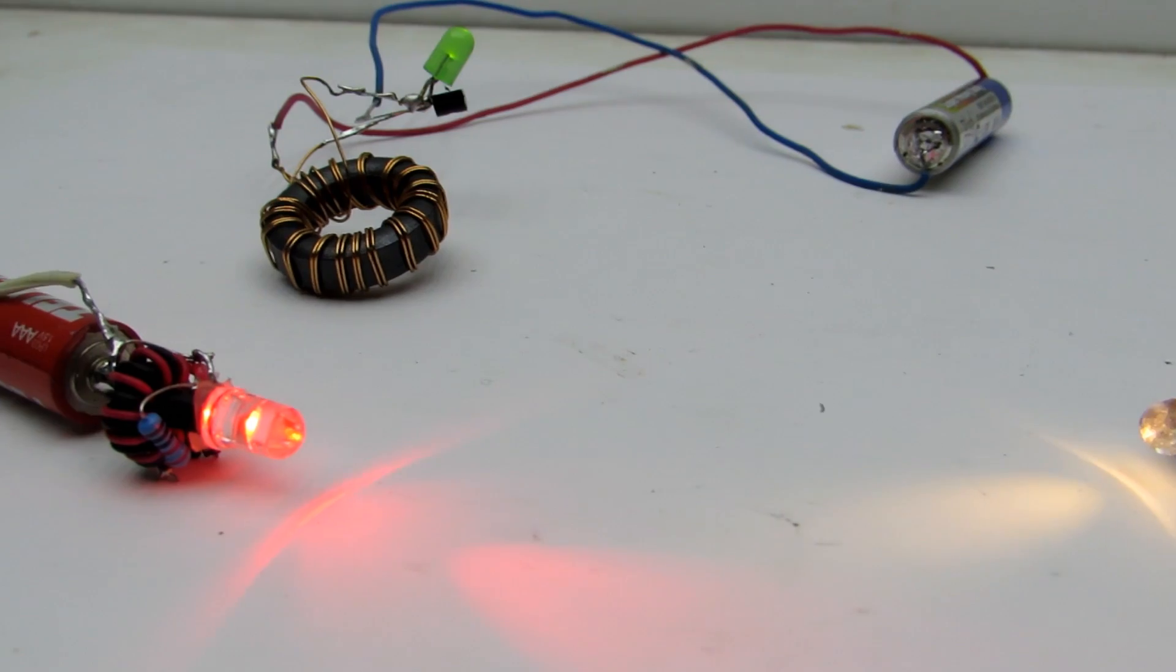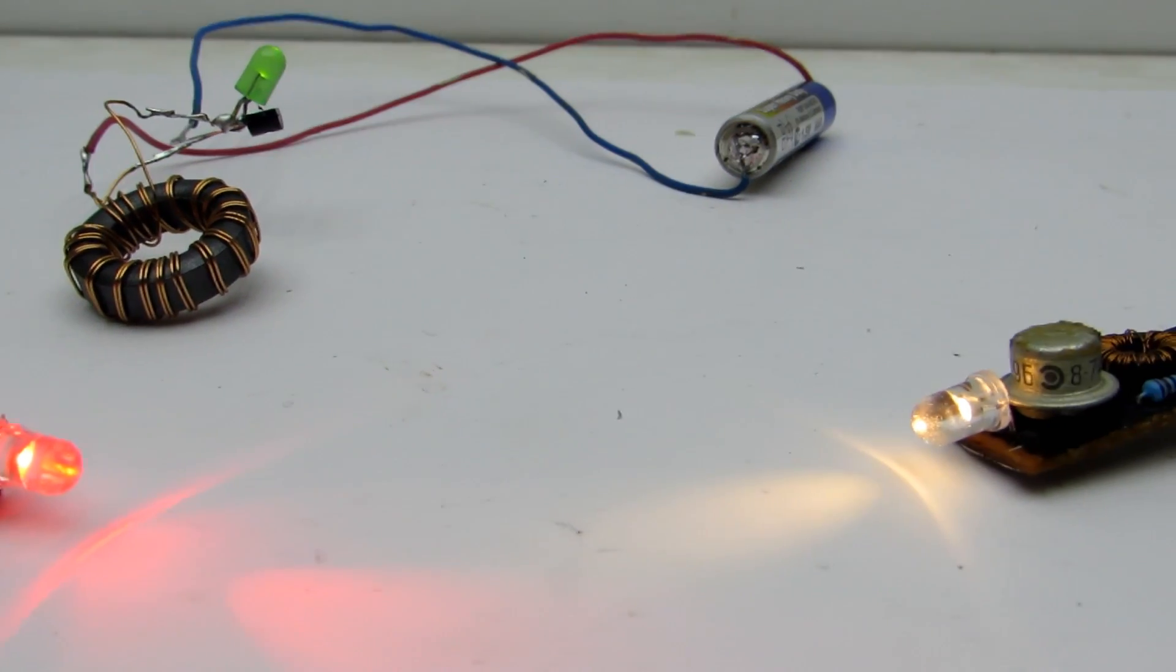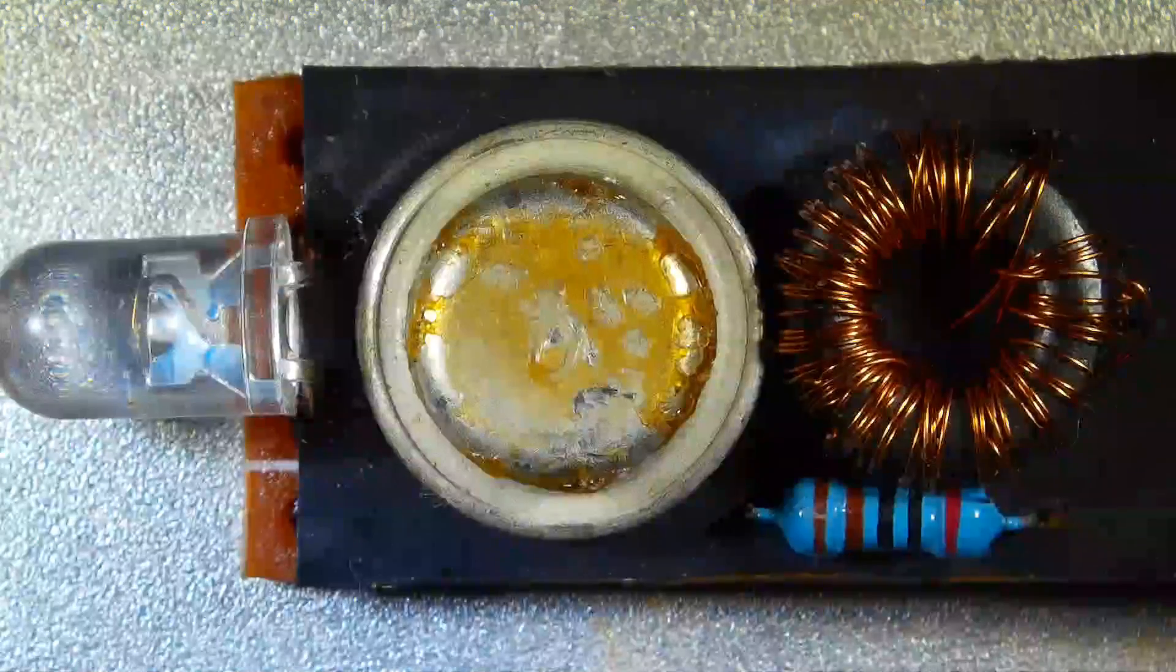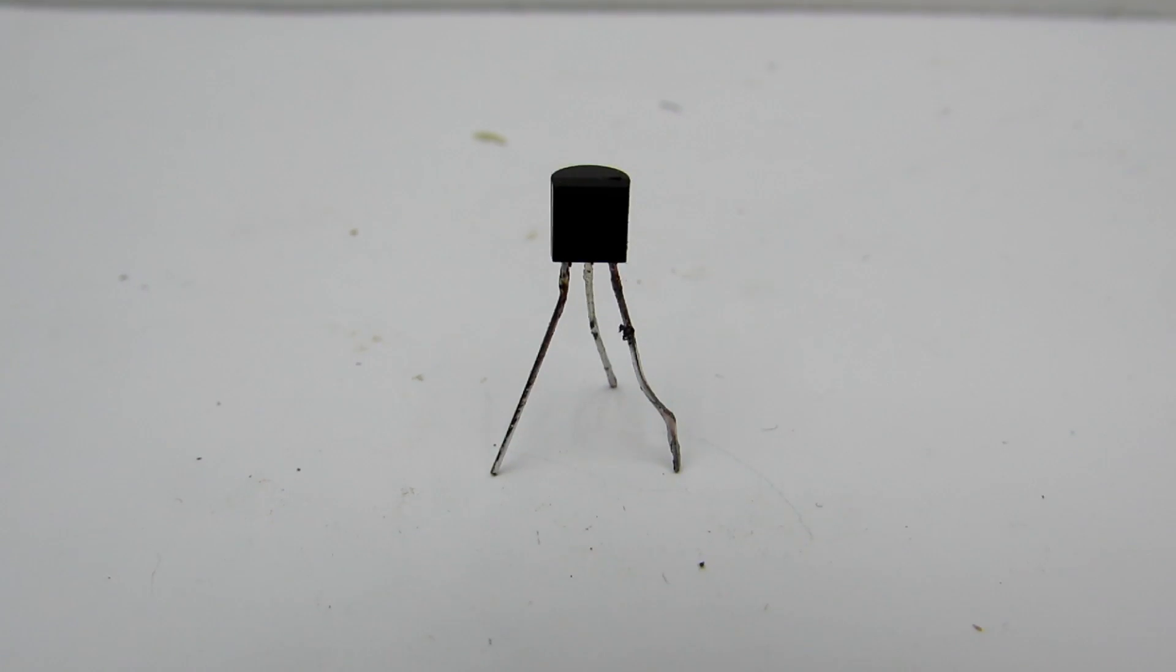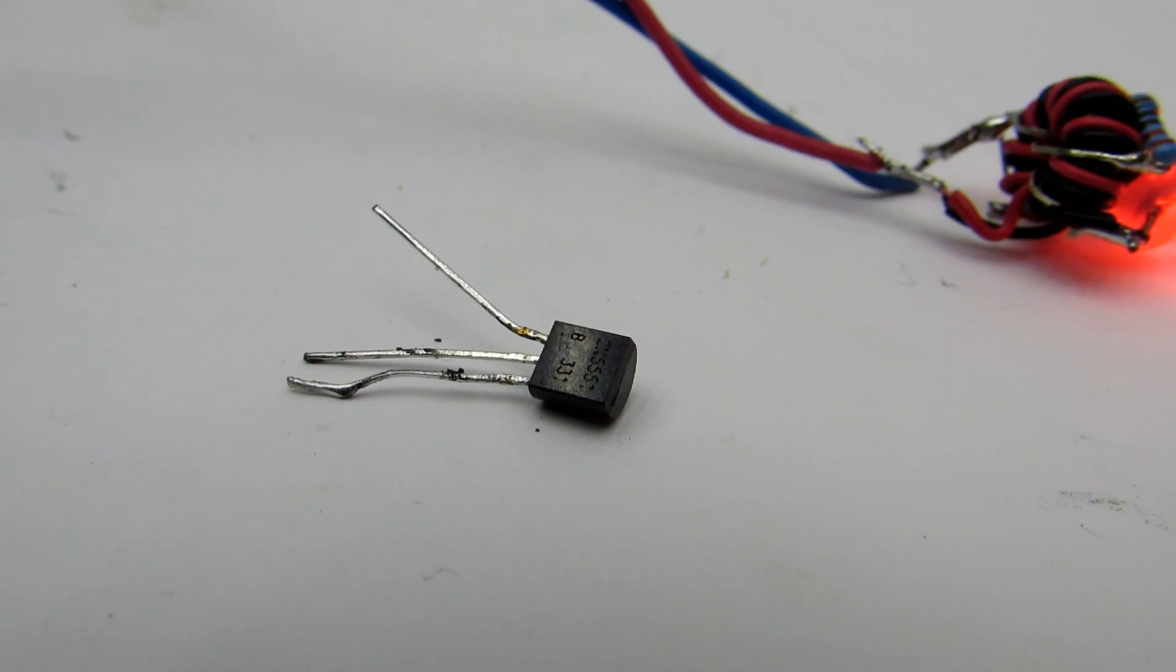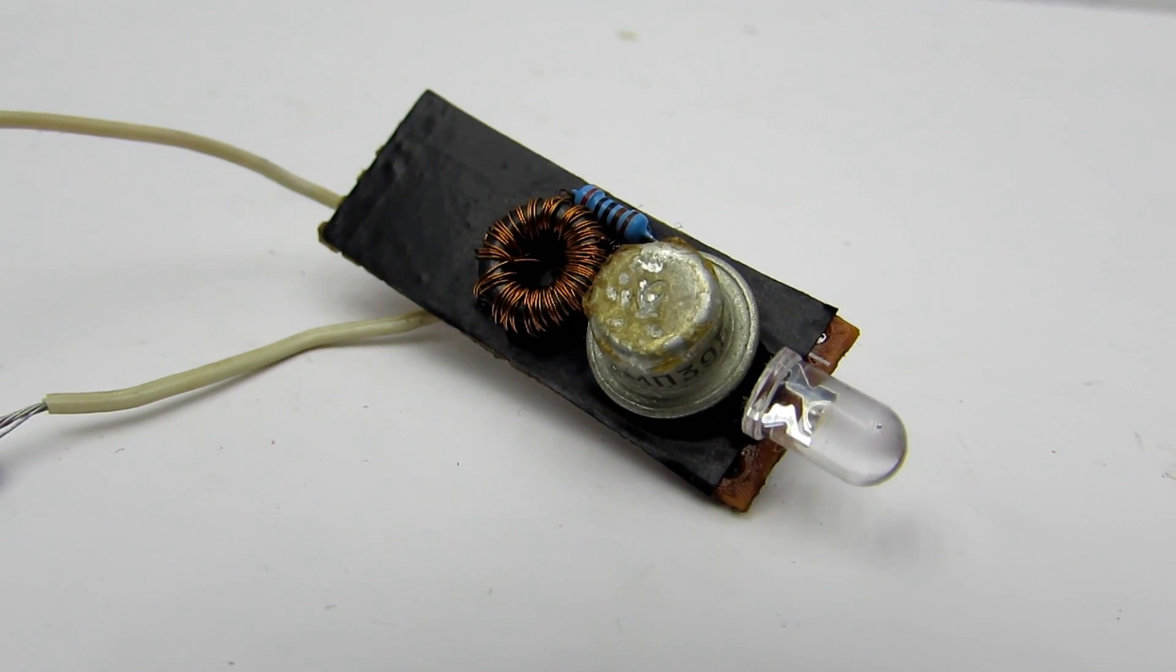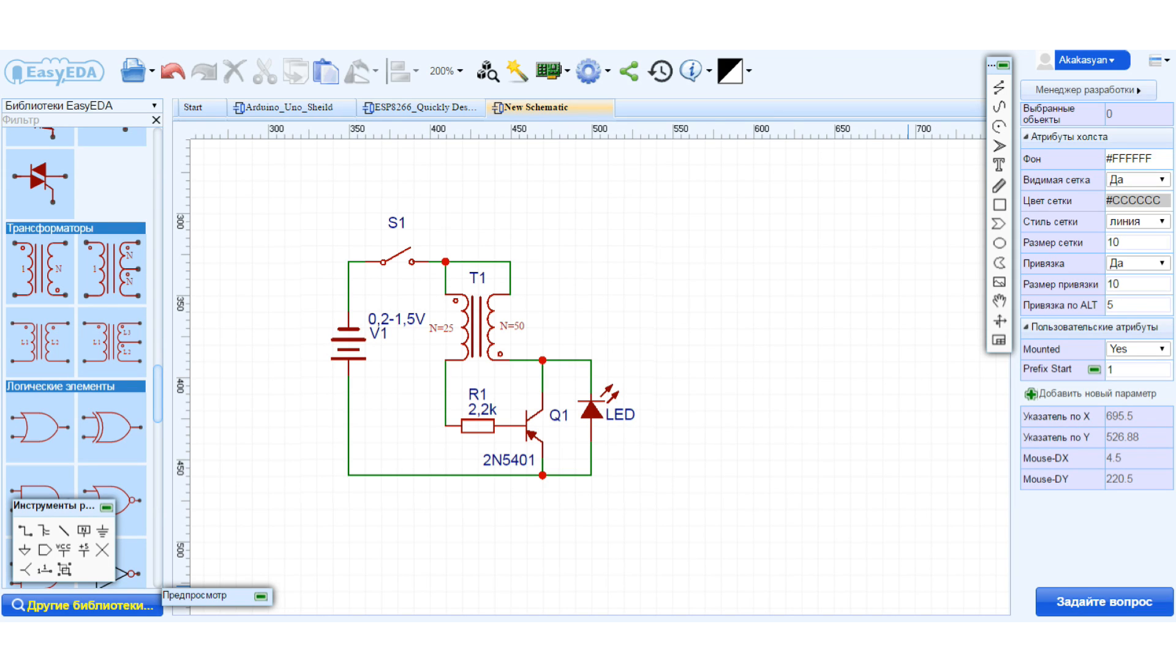Due to small number of parts, no need to make PCB. Here can be used any low-power reverse conduction transistor, for example 2N5551, S9014, S0918. You can use also forward conduction transistors. In this case, it is necessary to change the polarity of the battery and the LED.